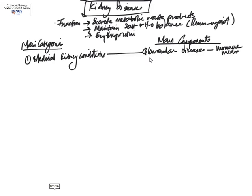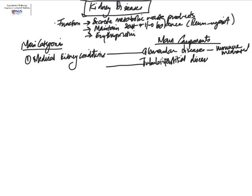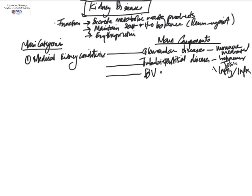Medical kidney conditions go according to the anatomical compartments of the kidney. One compartment is the glomeruli. Under glomerular diseases, we have a whole host of conditions, and glomerular diseases are often immune-mediated. The next big category is tubulo-interstitial diseases. Conditions of the renal tubules often also affect the interstitium, so they are considered together. Their etiology is mainly due to ischemic or toxic insults, as well as inflammatory mechanisms or infection. The last main compartment is the blood vessels, and all three will be covered later in a separate mind map.